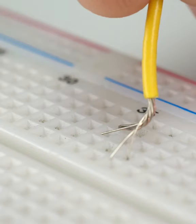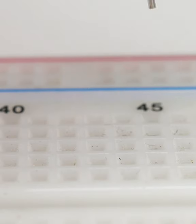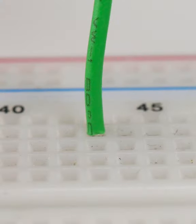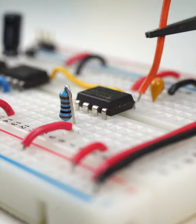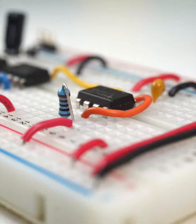Stranded just doesn't get along with breadboard clips, while solid stays solid. And it'll retain the shape you bend it into, which is great for keeping a wire close to the board and nicely routed.